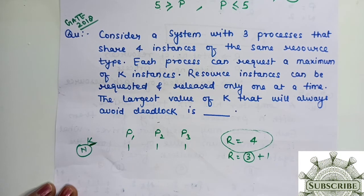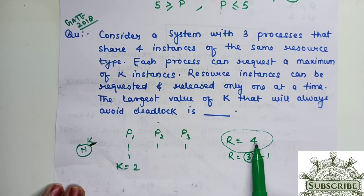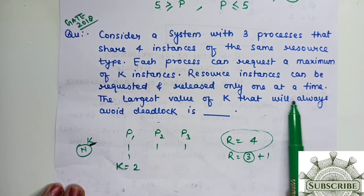That resource can be given to one process, then it is released by the process and can be distributed among different processes. So the total number of K instances, K ki value is 2. If we take 2, if we have 4 instances and all need 2, each gets one, one extra is left with us that can be given to any of these processes to complete their task and we will be able to avoid the deadlock. So the largest value of K that will always avoid deadlock is K equal to 2.